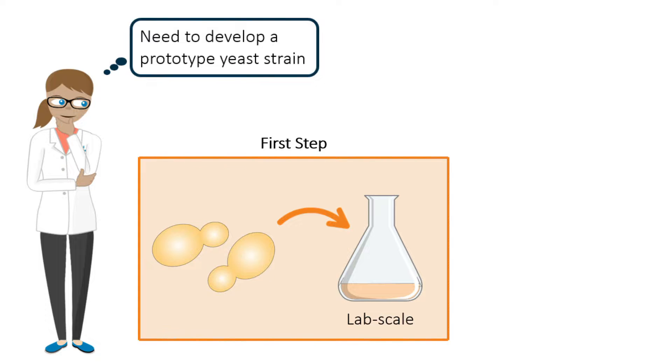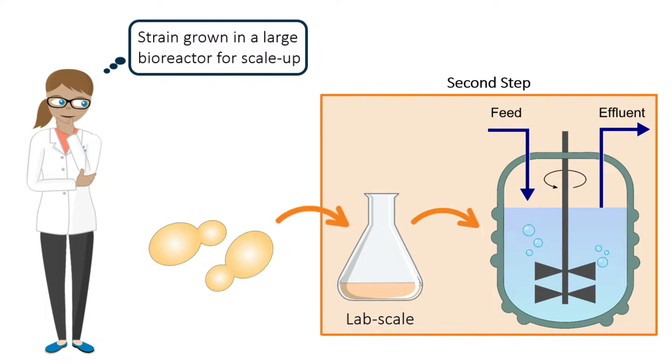To produce the drug in an industrial scale, Alex set out to first develop a prototype yeast strain that can produce the drug in a small lab-scale setting. Once the yeast is able to produce the drug in a desired titer, the prototype strain will be grown in a larger bioreactor for scale-up.